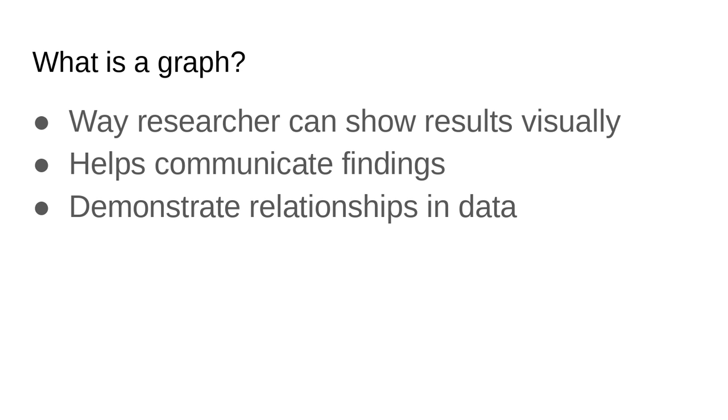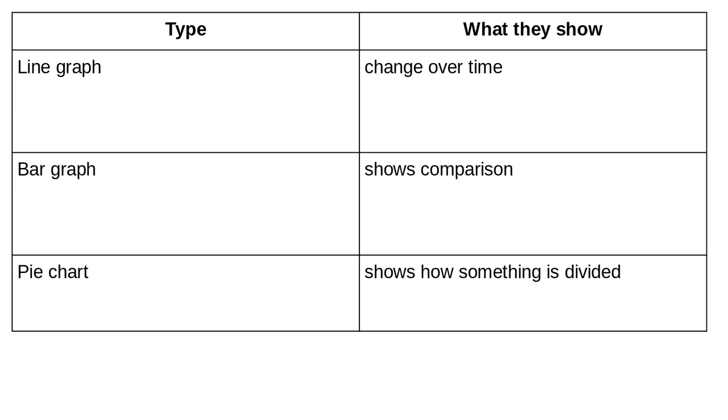Graphs provide a convenient way for us as citizen scientists or student scientists to understand relationships in data that come out of experiments or research projects. Three basic types of graphs: line graphs show changes over time, and bar graphs are used to show comparisons between items.